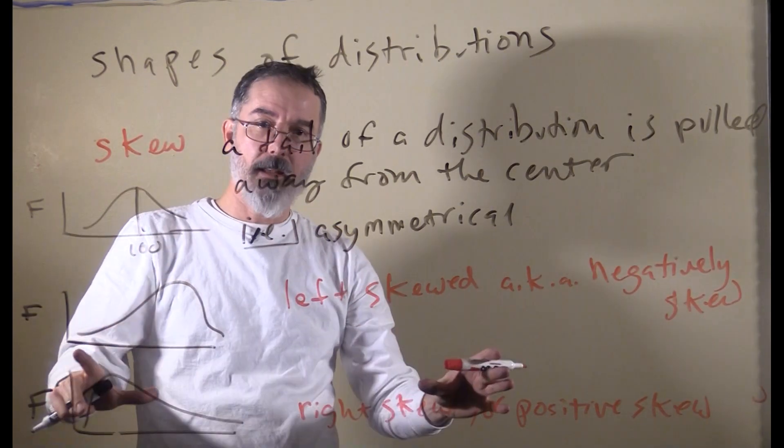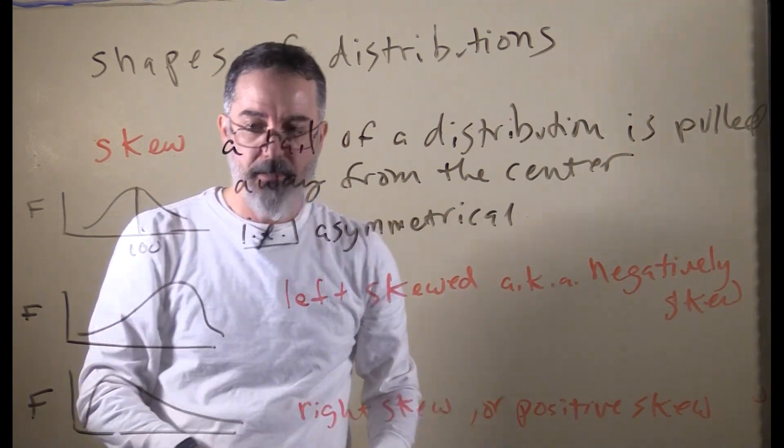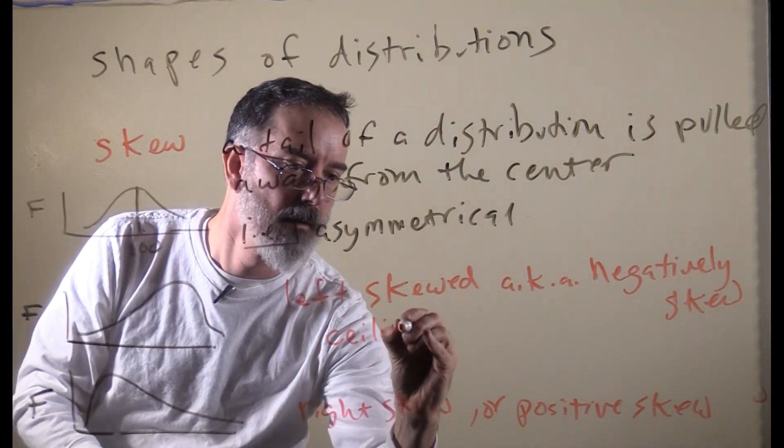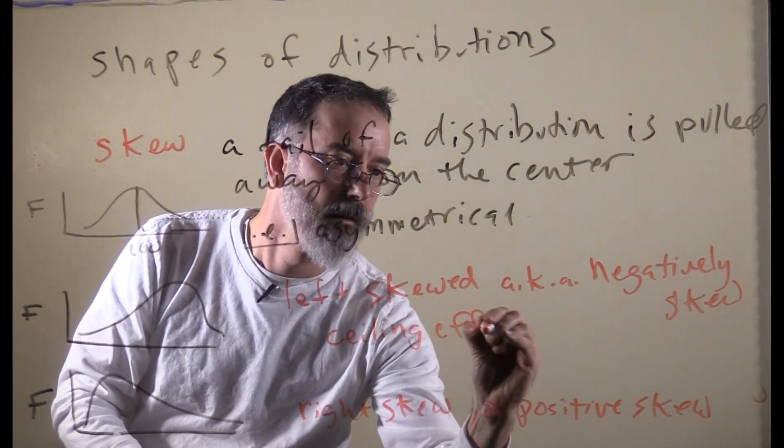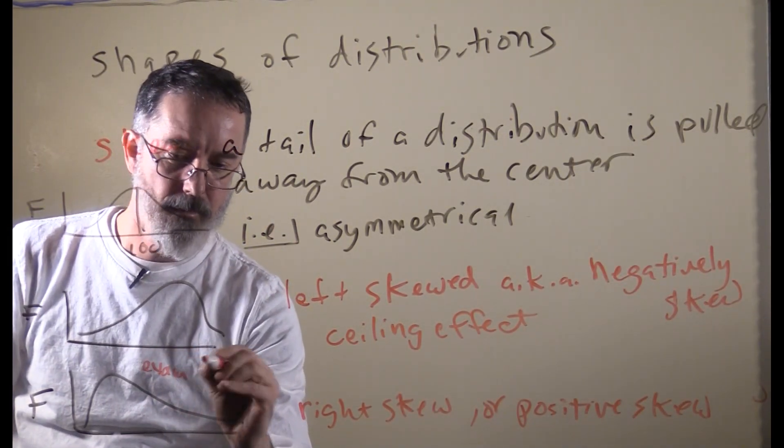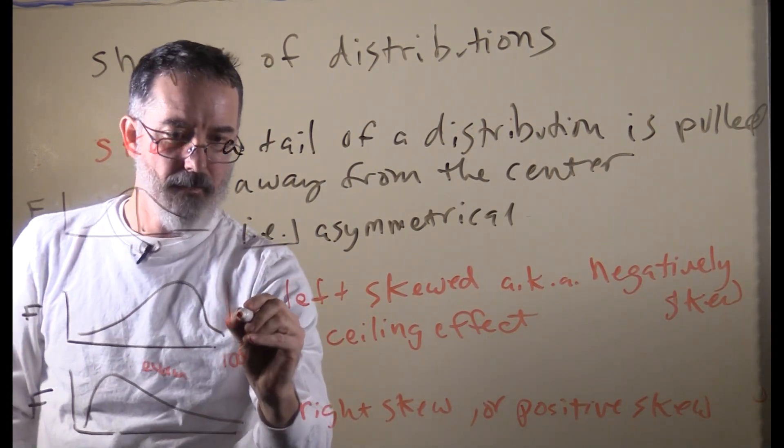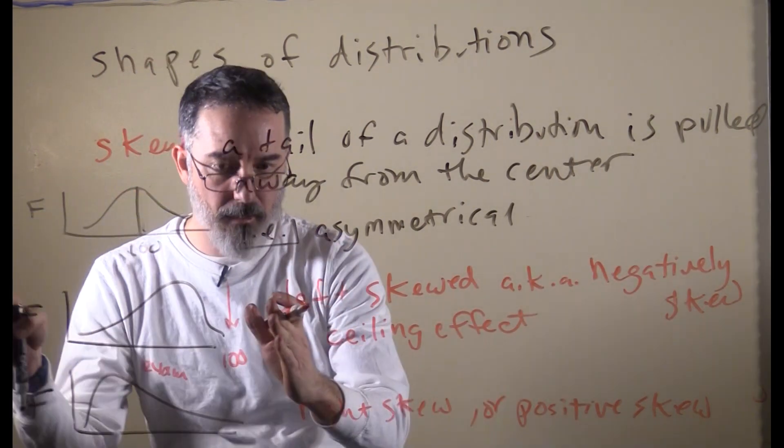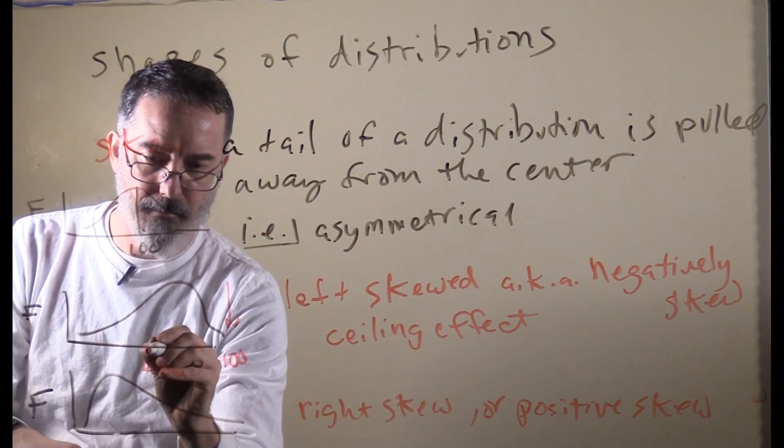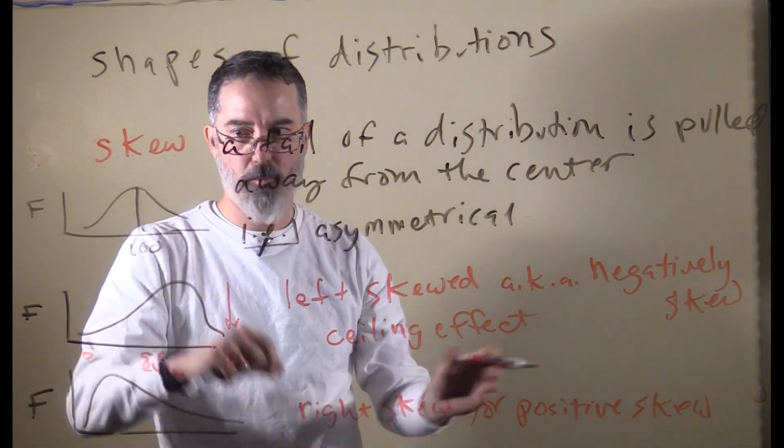One reason you might end up with a left skewed data set is you could have a ceiling effect. For example, if these are exam scores as percents, and 100% is here, that is a ceiling, an upper cap on how high scores can go. This is down at like 50 and zero, so just a few folks got zero points.